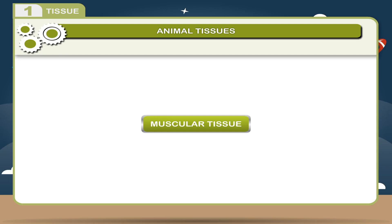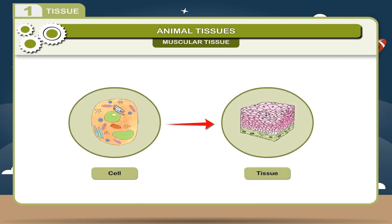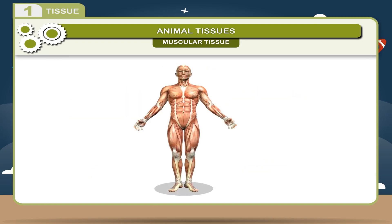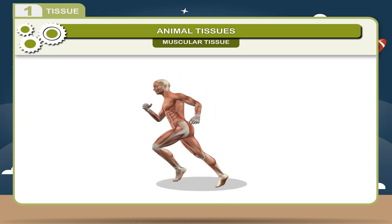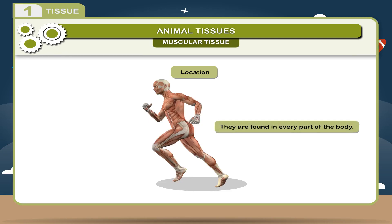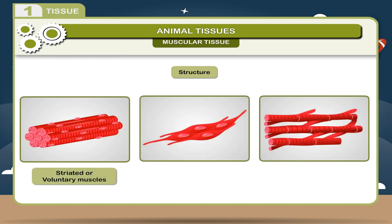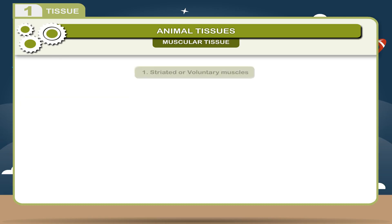Muscular tissue: This tissue consists of bundles of cells called muscles. The muscles are specialized to undergo repeated contraction and relaxation, which are responsible for the movement of the body parts. They are found in every part of the body. They are of three types: Striated or voluntary muscles, Unstriated or involuntary muscles, and Cardiac muscles.